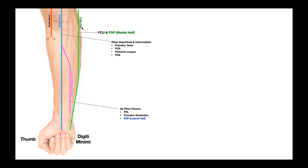Here we're going to begin by talking about the ulnar nerve. This is the most medial of all three of these. It's going to run down the medial side of the forearm and eventually go into the hand on the side with the fifth digit — the little finger, or digiti minimi. The hand will be covered in the next video.